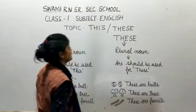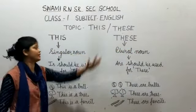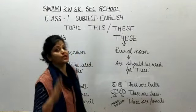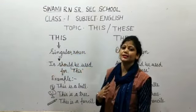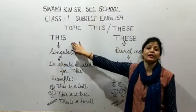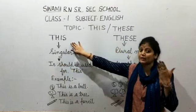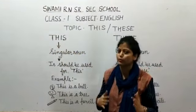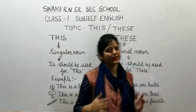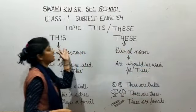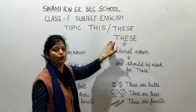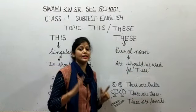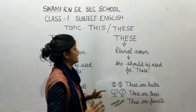Today I will tell you about 'this' and 'these'. 'This' is always used for a singular object, person, place, and thing. And 'these' is always used for more than one object, person, place, and thing.